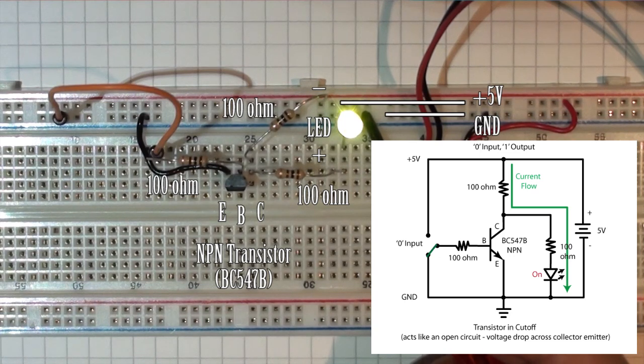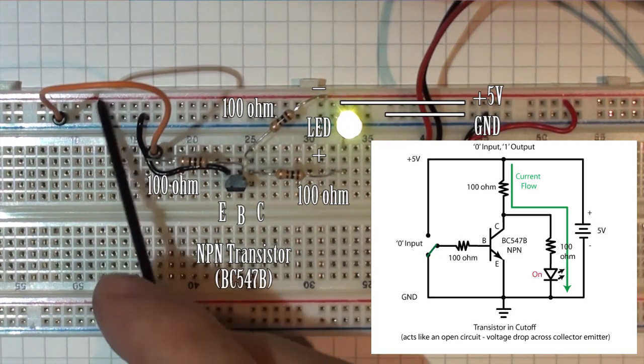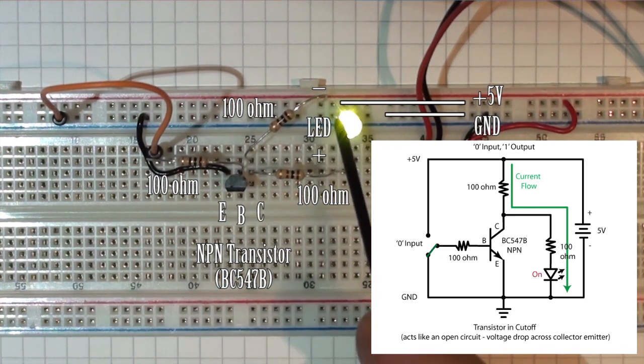In this case, the LED lights, so we can say that with an input of zero, we have an output of one.